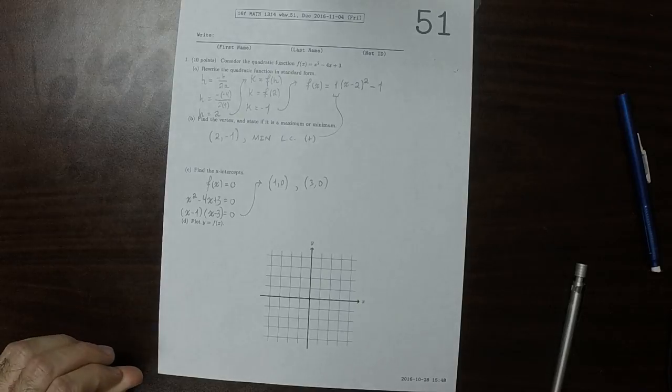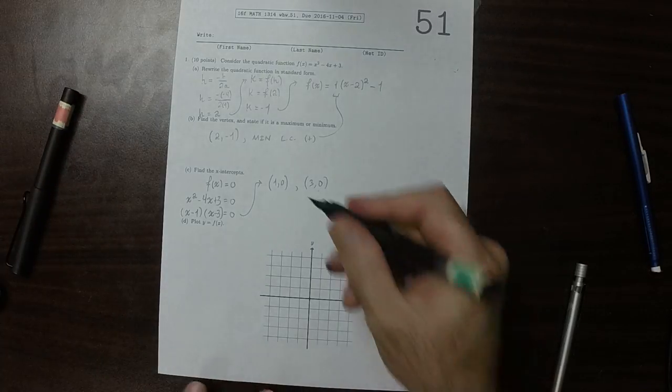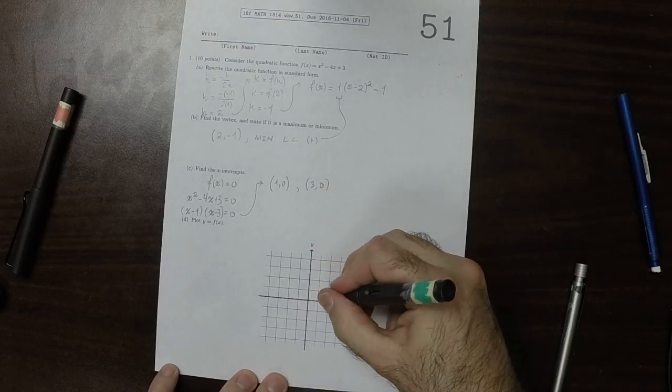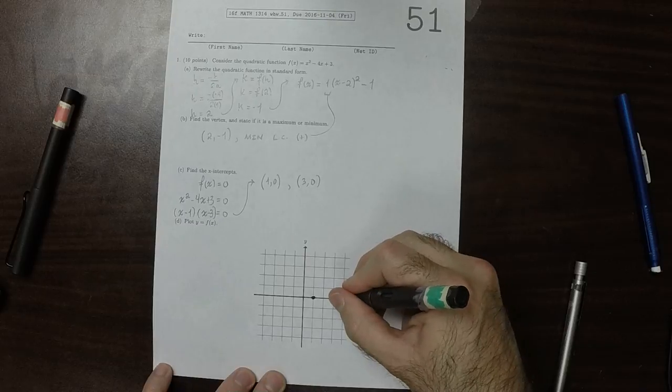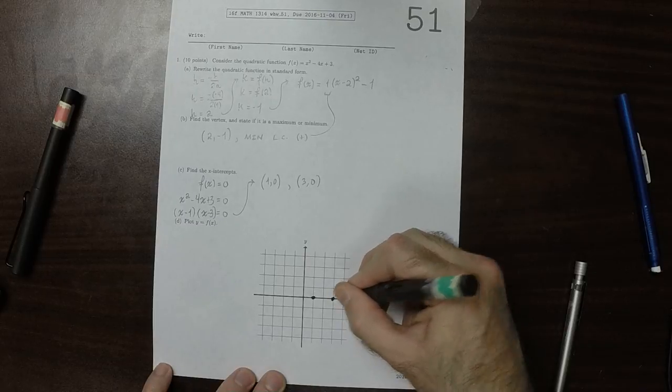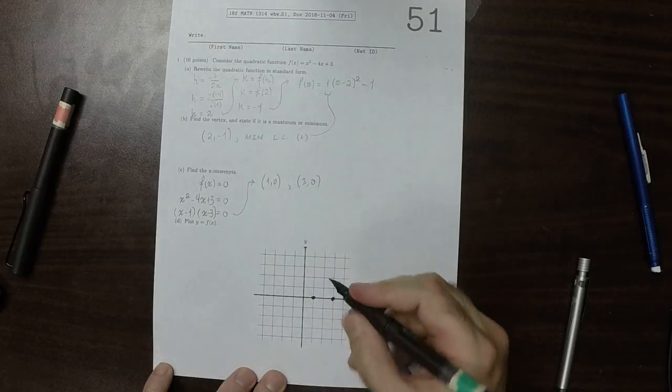To plot these now, we know several points. So, 1, 0, 3, 0. And we also know the point 2, negative 1.